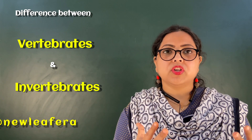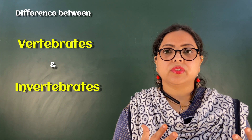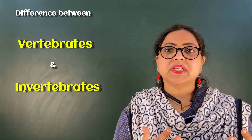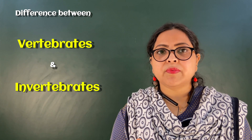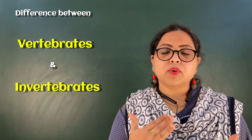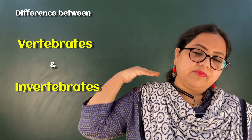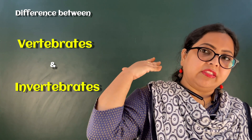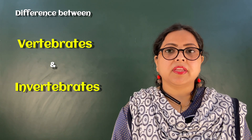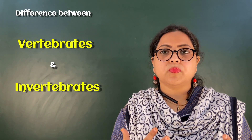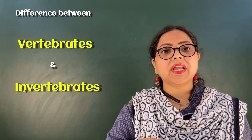In invertebrates, which we call non-chordates, the heart is present on the dorsal side of the body — the upper side, above the alimentary canal. In vertebrates, the heart is present on the ventral side — the front side, below the alimentary canal.